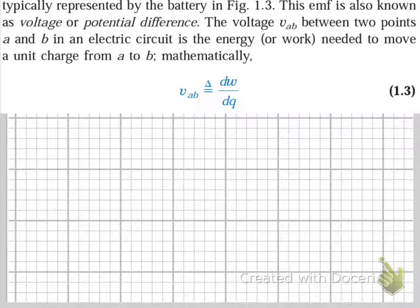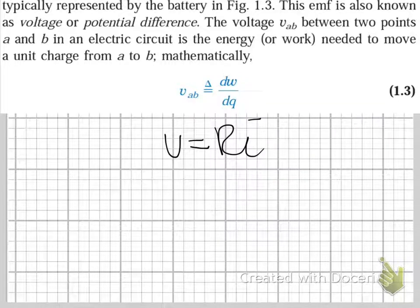This is the formula for voltage. In the next chapter we will use V is equal to RI. That will be the formula that we use for voltage. But for now remember that voltage can also be found as a derivative of work in terms of the change of charge.